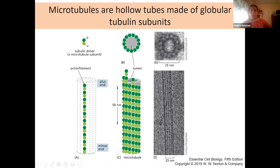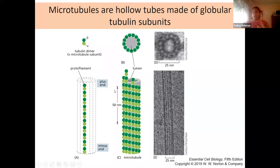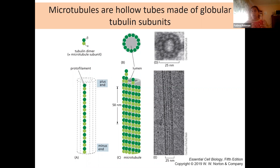Unlike intermediate filaments, which are solid rope-like structures with no hollow interior, microtubules are not completely solid. The way the tubulin dimers come together, they create a tube-like structure — they are hollow inside. A number of dimers come together to create a circular arrangement, and that circular arrangement is then extended to create the final microtubule.